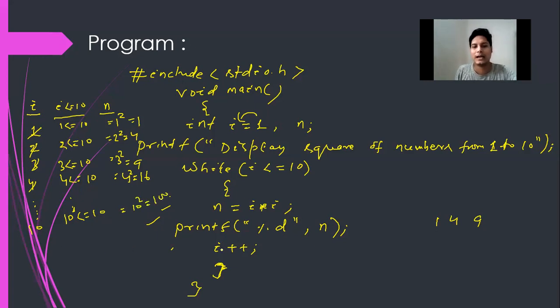So now i plus plus, the value of i will be incremented to 11. So 11 less than equal to 10, is it true? No, this is false. So if this is false, then the control goes out of the loop. So already the square of 1 to 10 numbers have been printed here. So let's execute this program in my Dev C++ editor and see how this works.